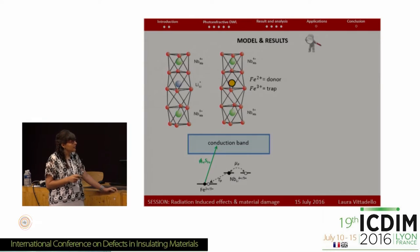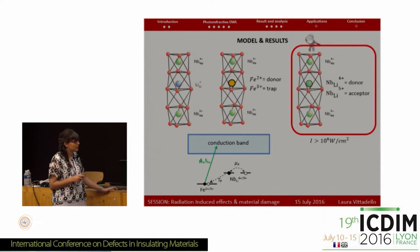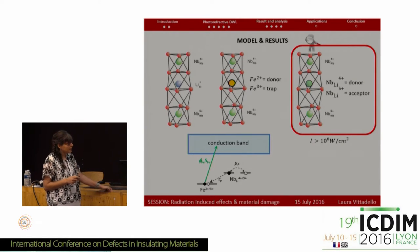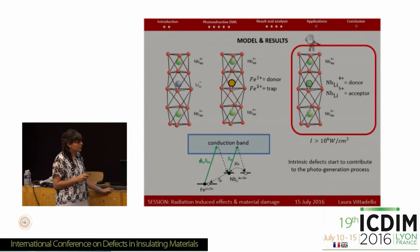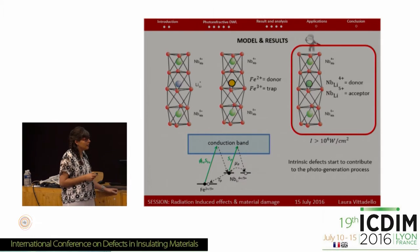In the one-center model, the only donor is iron. But if the intensity increases up to the range of one megawatt per square centimeter, it becomes necessary to consider another intrinsic defect named niobium antisite, which starts to play a role and contributes to the photogeneration process. It is therefore necessary to substitute the one-center model with a two-center model.